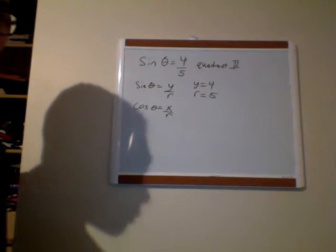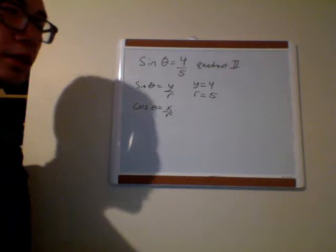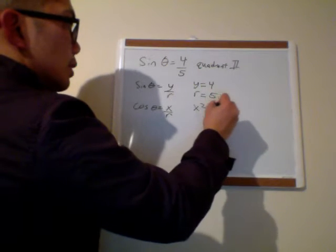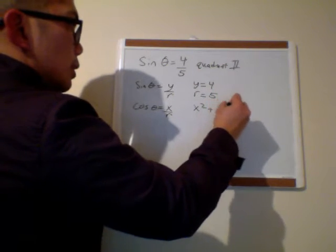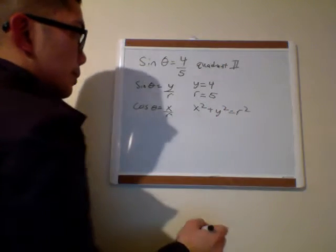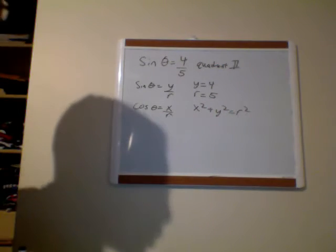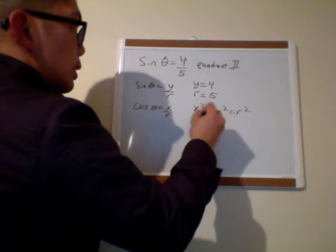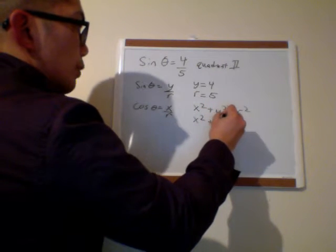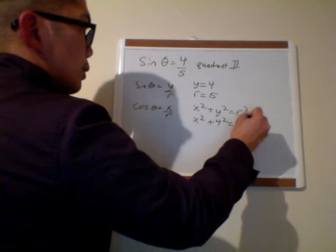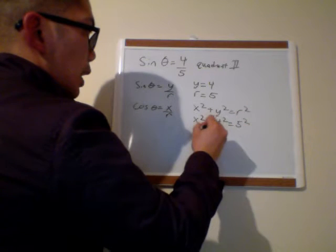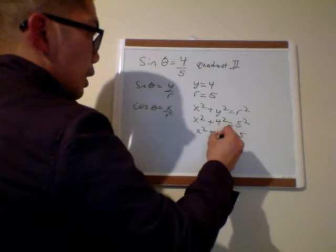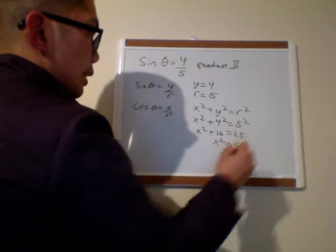In order to find my x, I'm going to use the equation of a circle, which is x squared plus y squared equals r squared, centered around the origin. So I put x squared plus 4 squared equals 5 squared. I get x squared plus 16 equals 25, and x squared equals 9.